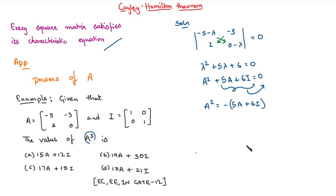Here we need to calculate A cube. So multiply both sides by A, we get A cube is equal to minus 5A square plus 6A.